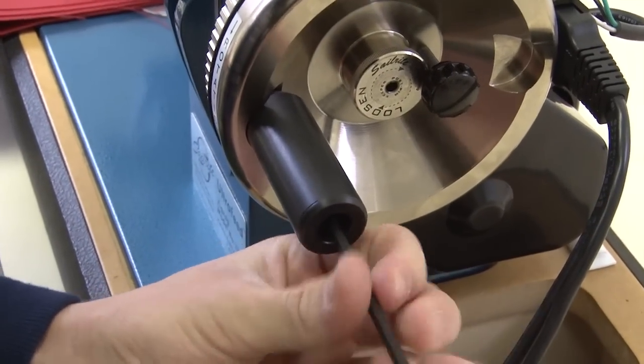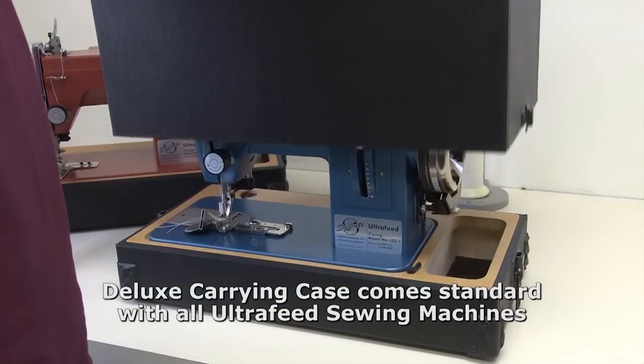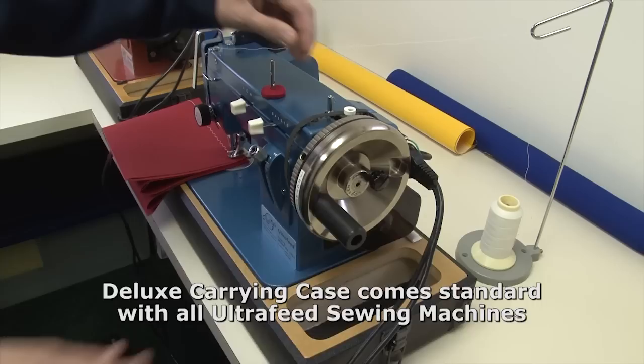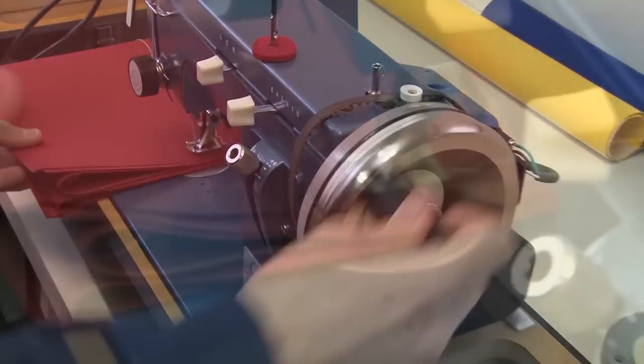If you choose to leave the hand crank handle on, the case top that Sailrite provides will fit directly over it with the handle installed. Sailrite's designed the electrical cord so that it can be removed so it doesn't get in your way when you're hand cranking.